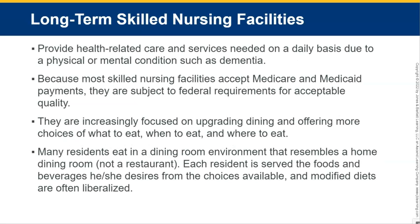Long-term skilled nursing facilities provide health-related care and services needed on a daily basis due to a physical or mental condition such as dementia. Because most skilled nursing facilities accept Medicare and Medicaid payments, they are subject to federal requirements for acceptable quality. They are increasingly focused on upgrading dining and offering more choices of what to eat, when to eat, and where to eat. Many residents eat in a dining room that resembles a home dining room rather than a restaurant. Each resident is served the foods and beverages they desire from available choices, and modified diets are often liberalized — since residents may be 60, 70, 80, or 90 years old, even those on cardiac or diabetic diets often have those restrictions loosened to improve quality of life.